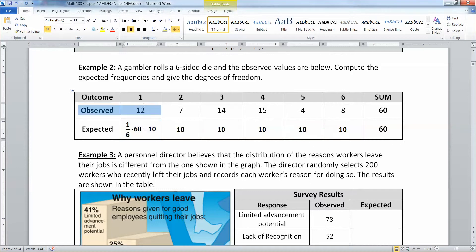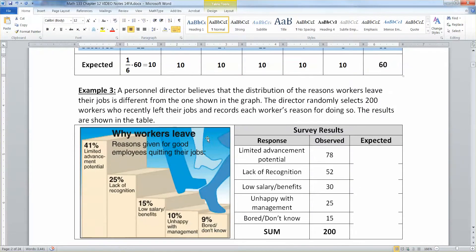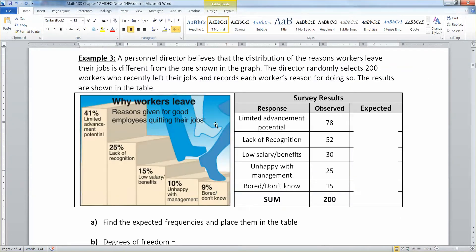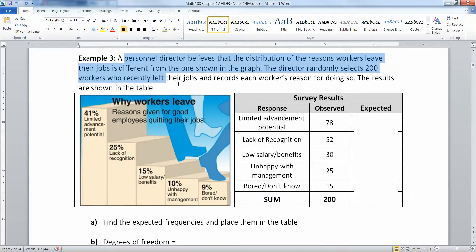Now that's one where everything was assumed to be equally likely, which is pretty common with dice. But what about if they're not assumed to be equally likely? What if each category has its own percentage? A personnel director believes that the distribution of the reasons workers leave their jobs is different from the one shown in the graph. The director randomly selects 200 workers who recently left their jobs and records each worker's reason for doing so. The results are shown on the table below.